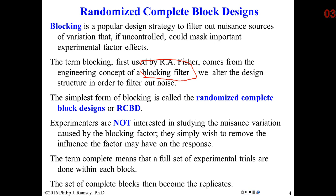Within each block of trials, we do every single treatment condition. Later in the course we'll talk about scenarios where there are too many different types of treatments to be run in all blocks — we call those incomplete block designs. The key is that in each block I have a complete set of trials, and the order in which I do the trials in each block is randomized. So block one, block two, block three would have a different run order. However, I can't really randomize the blocks — they're usually determined by the nature of the variation.